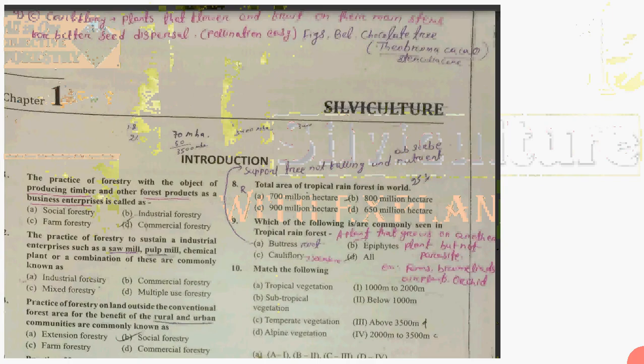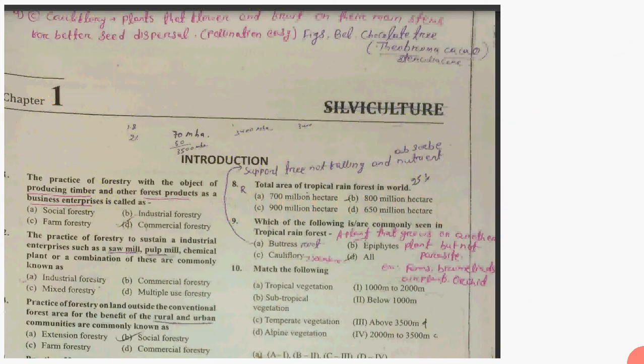The practice of forestry with the objective of producing timber and forest products as a business enterprise is called Commercial Forestry. Since this is a commercial activity, you can click on Commercial Forestry.